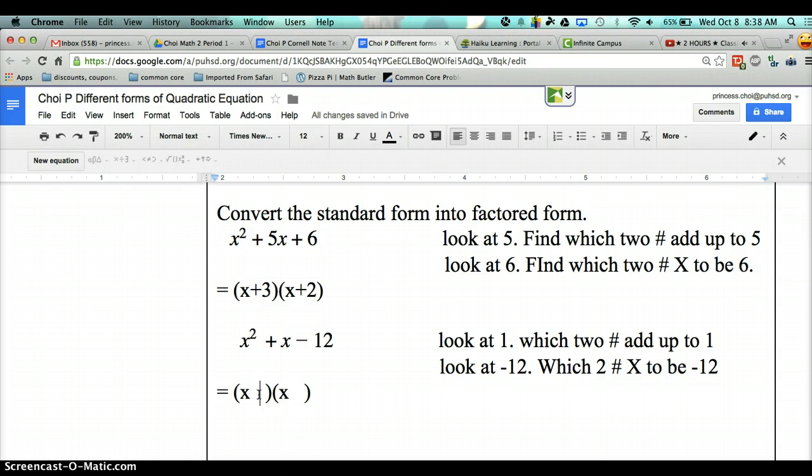Which two numbers can you add to get 1 and multiply to get negative 12? Negative 12 means 1 positive times 1 negative, right? So what do you have, guys? Think about it. Can anybody tell me? Anybody? Oh, my goodness. So I'll tell you. So it's going to be 4 and negative 3. 4 times negative 3 is negative 12 and 4 plus negative 3 is positive 1.